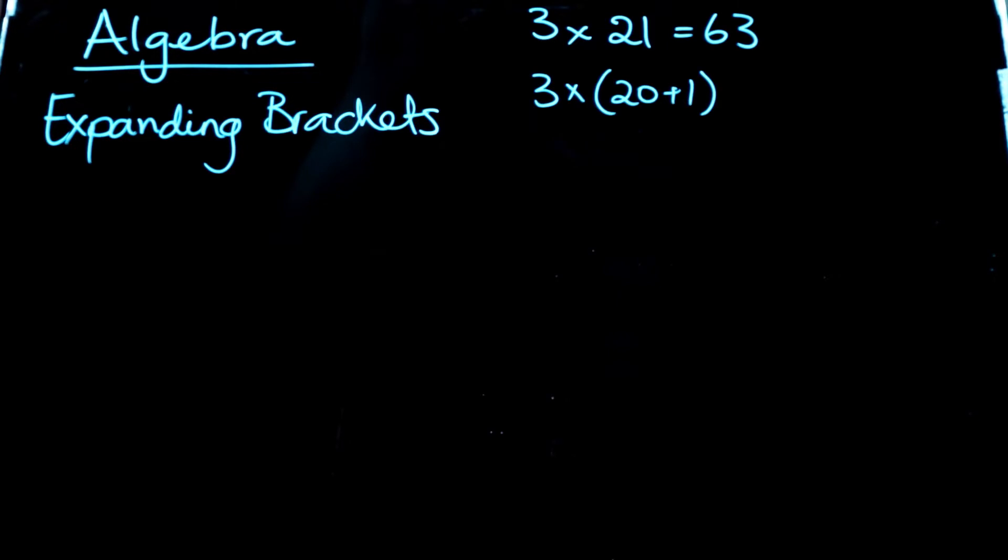And then we could write it as 3 times 20 plus 3 times 1. The differences, well, the main thing I guess is that we won't put the times sign here. And we didn't while we did that, we didn't sort of look carefully and examine what we're doing there. We went 3 times 20 and we also went 3 times 1 as a way of working this out.